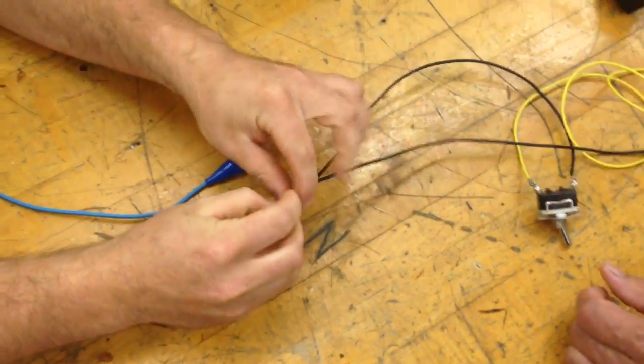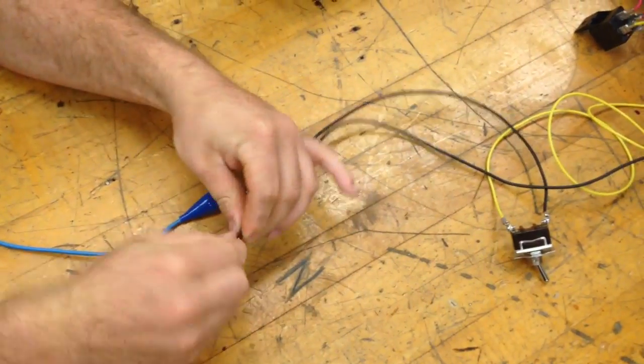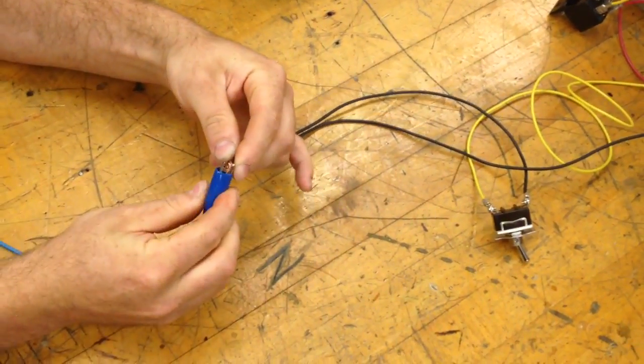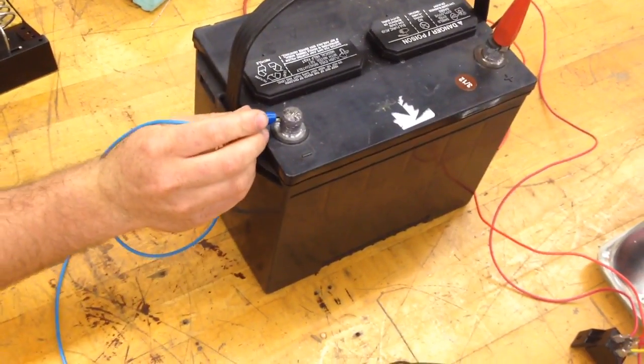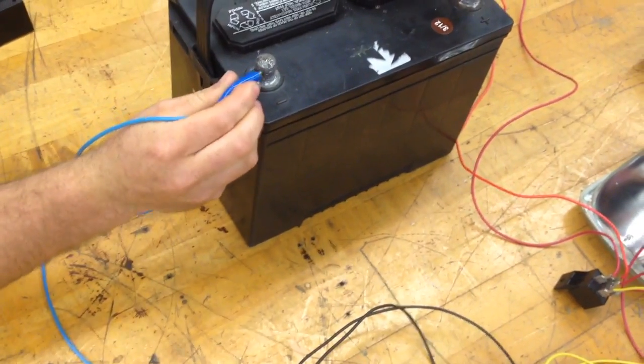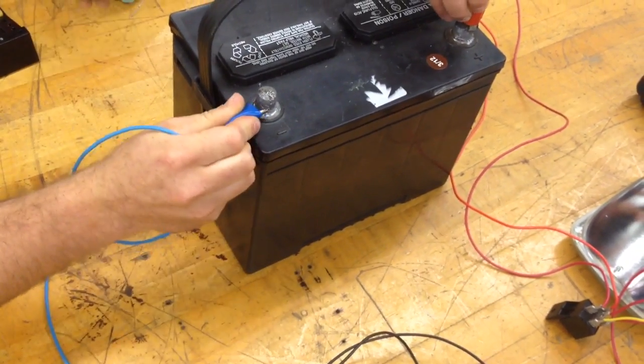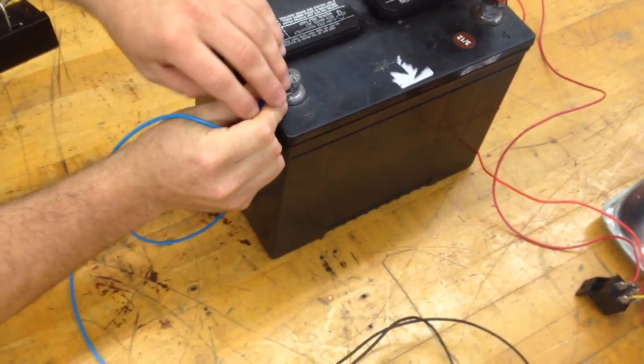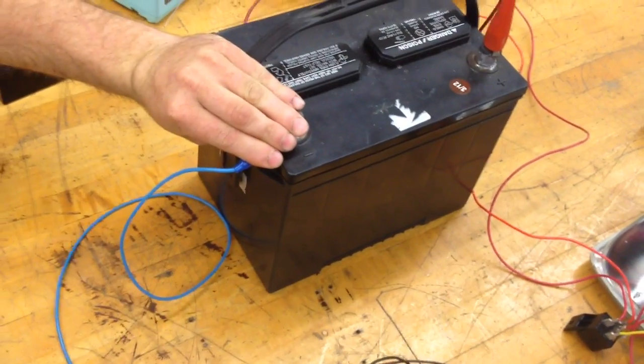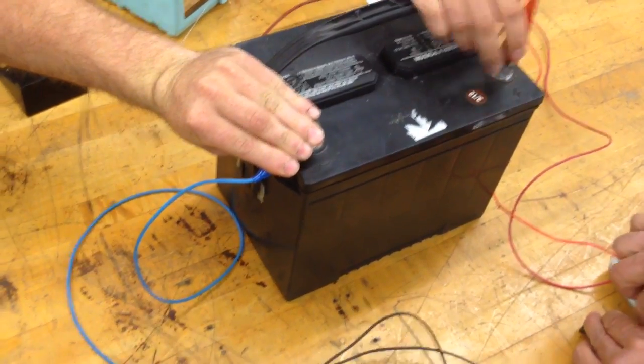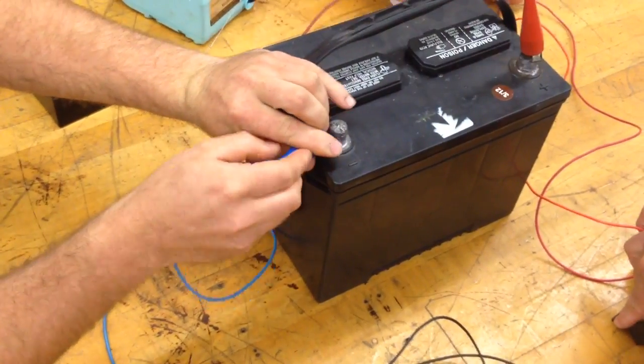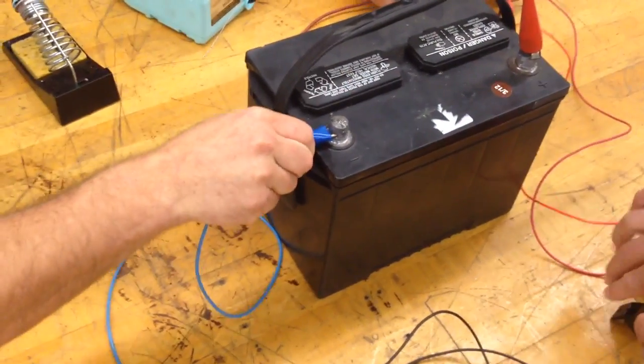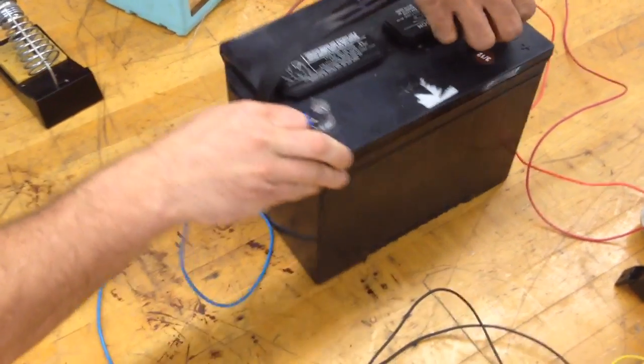We're using alligator clips to connect to the battery. You can use different types of clamps if you have something different. We're going to touch those two together on the battery. If you have big clamps that you can use a screw with and actually put a wire on it, that's better. We're using alligator clips, but you can use whatever you like.